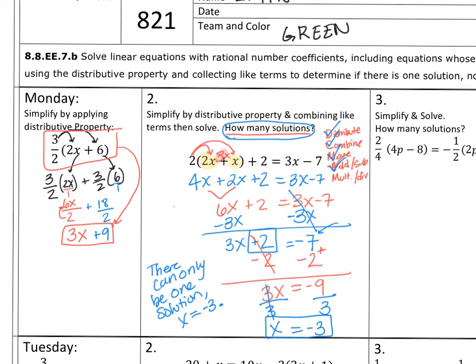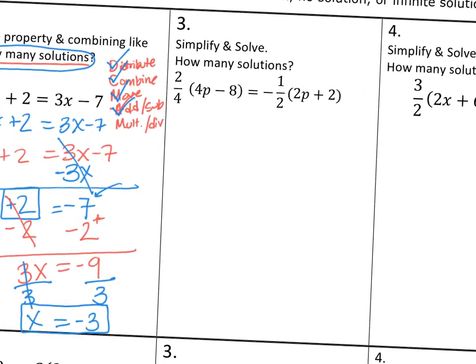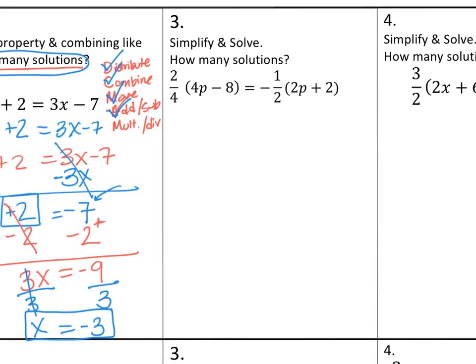Moving on to number 3. It says simplify and solve, and then it asks how many solutions. So first we need to write down DCMAM. I'm going to destroy or distribute, combine like terms, move the smallest variable, add or subtract. Last step is to multiply or divide. Please write it every time.